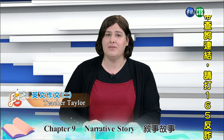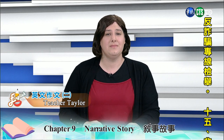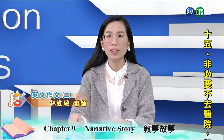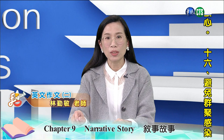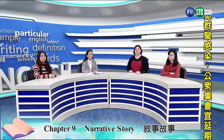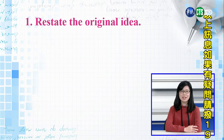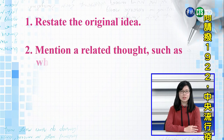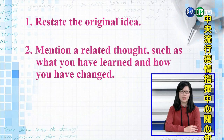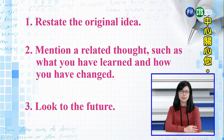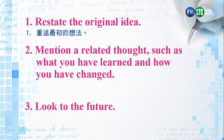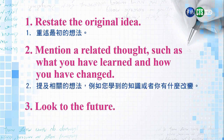Now that the reader has experienced what you have experienced, it's time to wrap up the story and leave the reader with some lasting ideas. What are the three possible ways to end a narrative? 那现在呢,既然读者已经经历了你所经历的一切事情,那现在应该到了写总结的时候啦。那我们要让读者呢有一个悬念。那同学们还记不记得呢,我们在写一个故事的结尾有哪三种方法可以写呢? First, you can restate the original idea. Second, mention a related thought, such as what you have learned and how you have changed. And the last one is look to the future. 所以方法有第一个重述最初的想法,再来呢是提及相关的想法,例如你学到了知识或者你有什么改变,最后你也可以写展望未来。